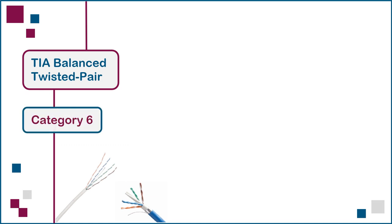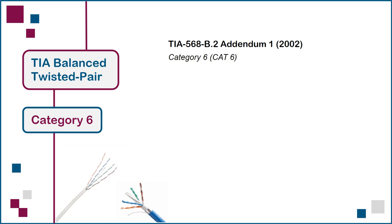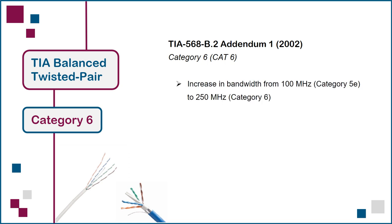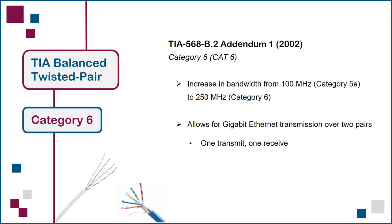Category 6 was first defined in 2002 as the next level of performance in balanced twisted pair cabling, surpassing Category 5E. It was specified in Addendum 1 of the TIA 568-B.2 standard. The main improvement over Category 5E was an increase in bandwidth from 100 MHz to 250 MHz, allowing Gigabit Ethernet transmission over two pairs. However, four-pair Gigabit Ethernet over Category 5E continued to be popular because many buyers did not want to pay more for Category 6 when Category 5E could also support Gigabit-rate networking.